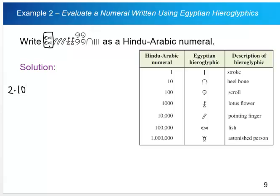There's two fishes, so that would be two hundred thousands. And there's three pointing fingers, so that would be three ten thousands.